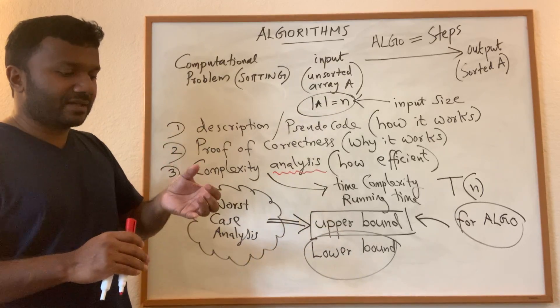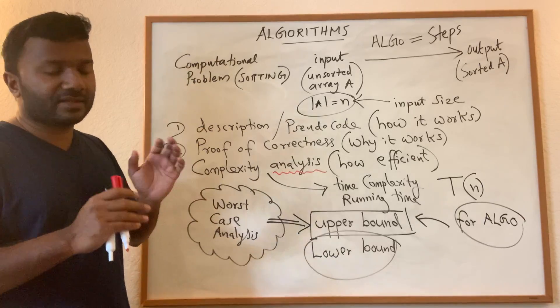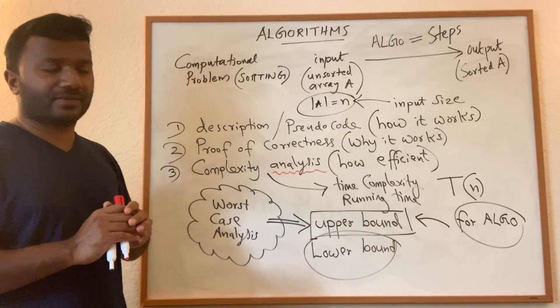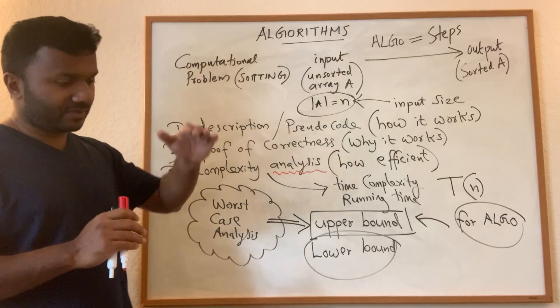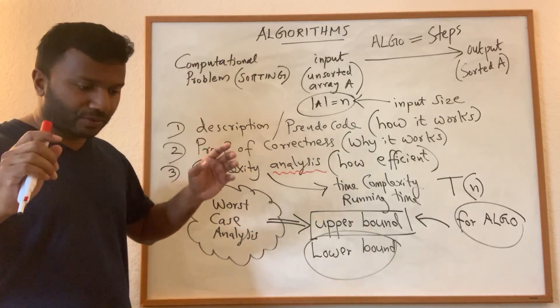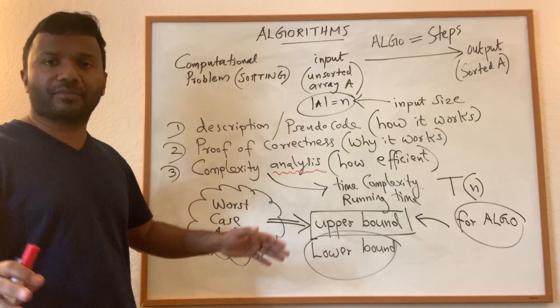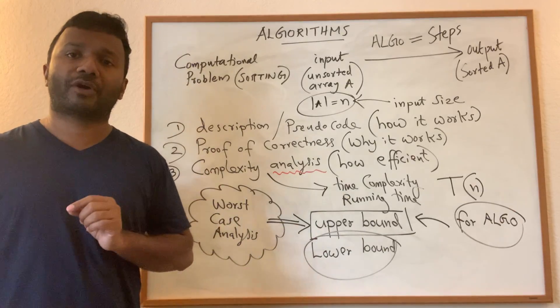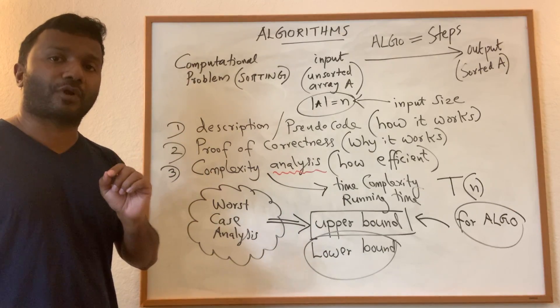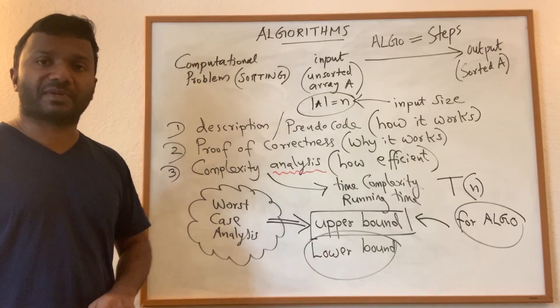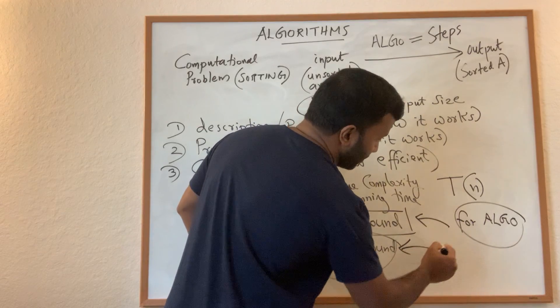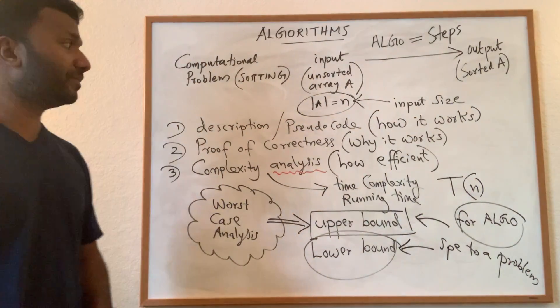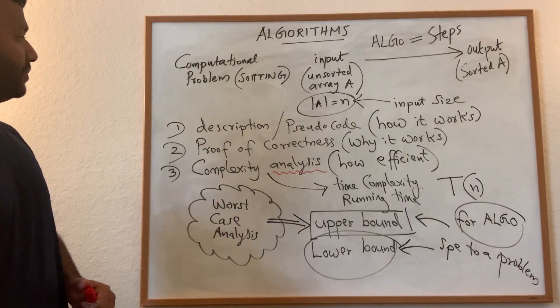So that means we are stuck at this point and this is called lower bound. So lower bound essentially means it's like a bottleneck. In some sense, you cannot come up with an algorithm better than the lower bound, no matter how smart you may be. So lower bound is like it's just telling you that you have to spend at least this much time or you have to do at least this many steps to solve it. That is called lower bound. And remember that lower bound is specific to a problem, upper bound is specific to an algorithm, and lower bound is specific to a problem.